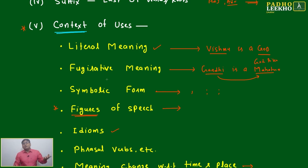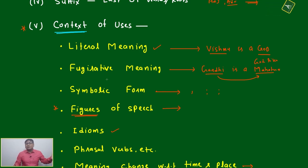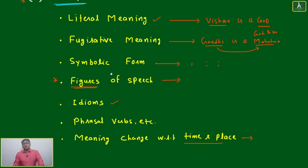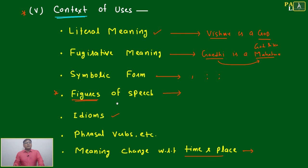A lot of reading — it is not going to come in one or two months of reading the newspaper or one or two books. You have to read a lot. Once you have read around 300 to 400 quality books, then you will be able to understand different types of context of usage and how to use figures of speech and figurative meaning in different ways.